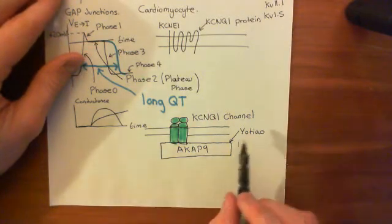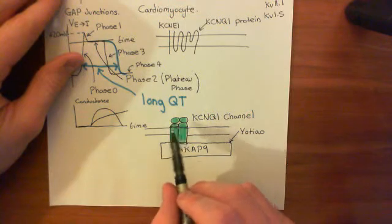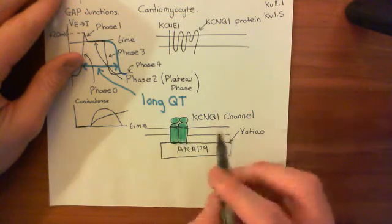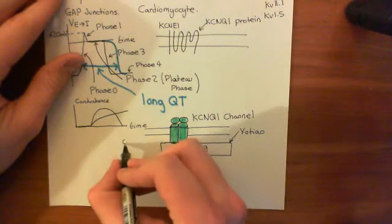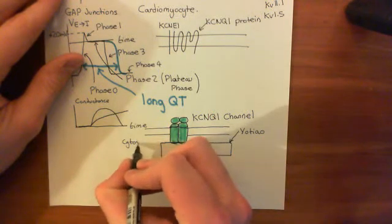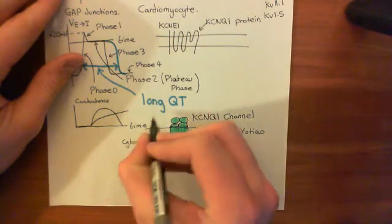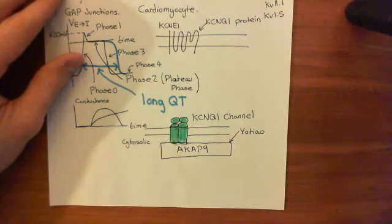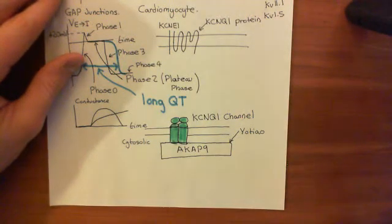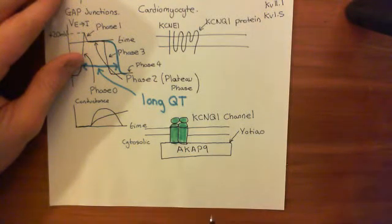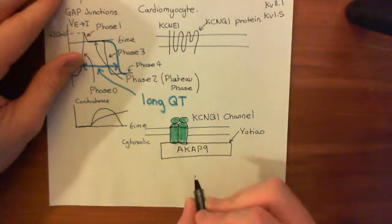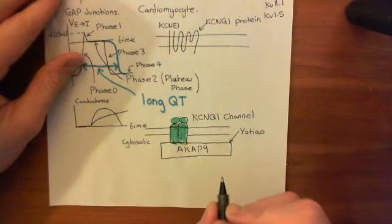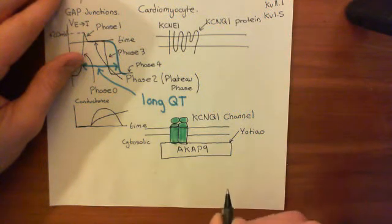So AKAP9, or YOTEO, binds to this KCNQ1 channel on the intracellular side — the cytosolic side. The extracellular domain is on the other side. AKAP9 also binds to a bunch of other important things — basically it's going to bind to the regulatory subunits of a type 2 protein kinase A.